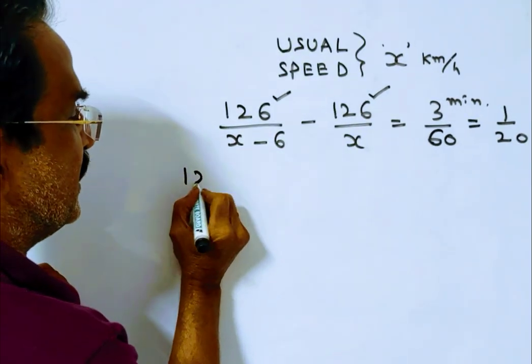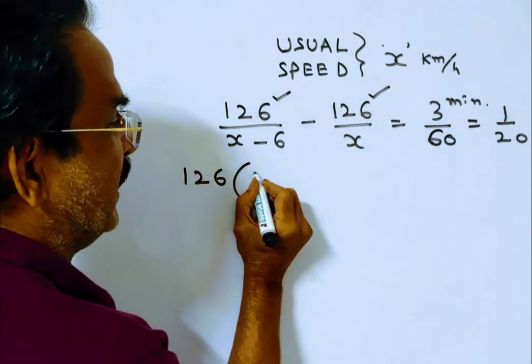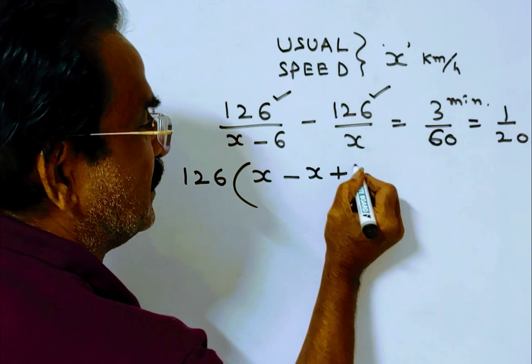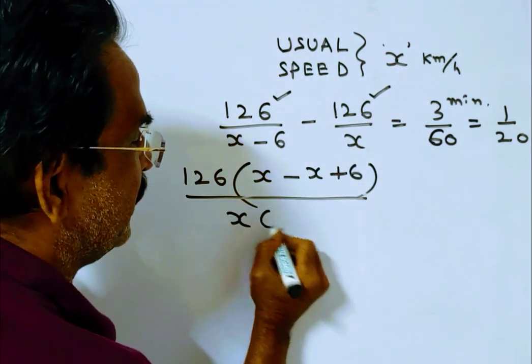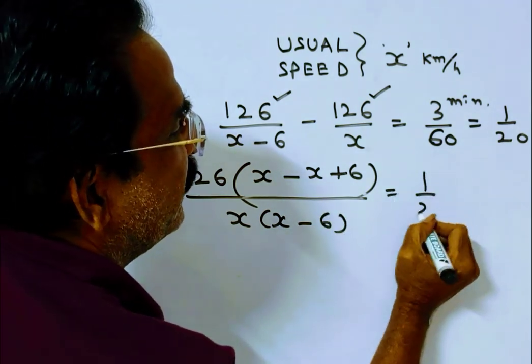Here 126 by (x-6) minus 126 by x. x minus x plus 6 upon x(x-6) is equal to 1 by 20.